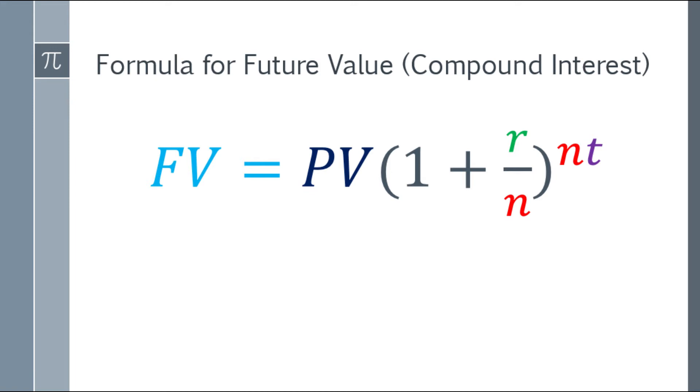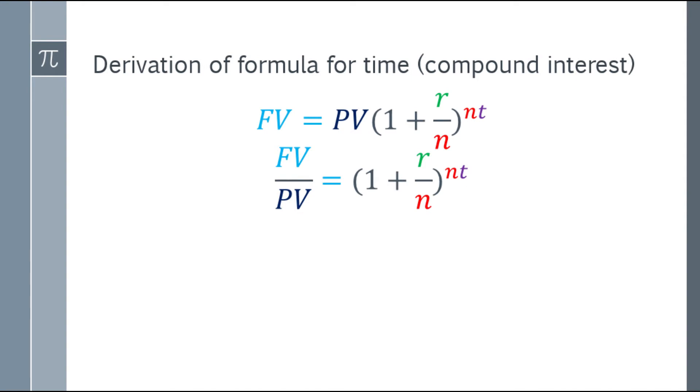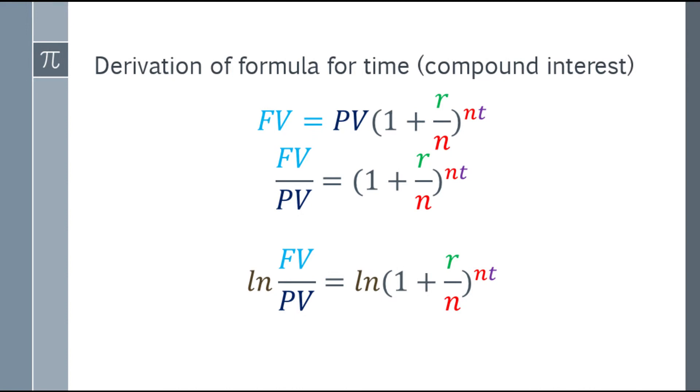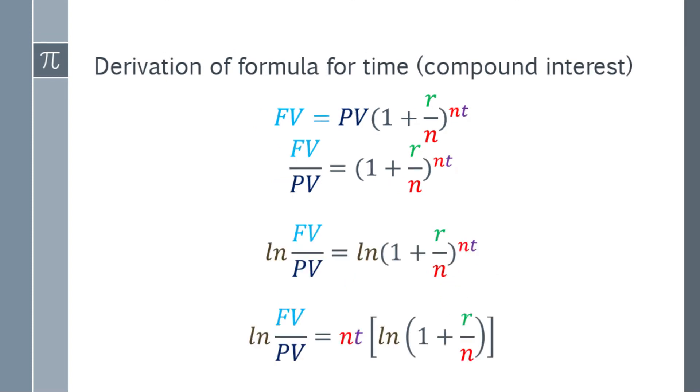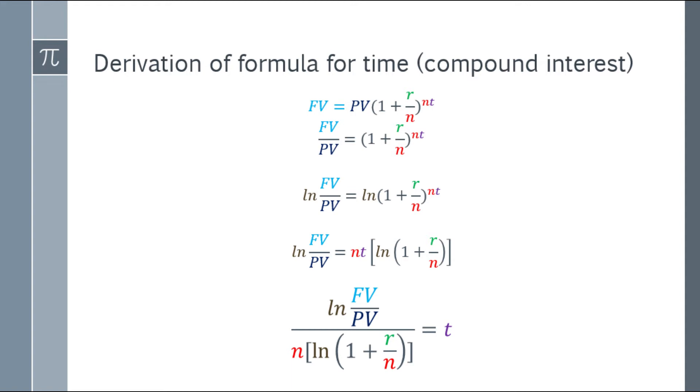Let's go back to the formula for future value. Future value equals the present value times the quantity 1 plus R over N, and the exponent is N times T. Now, divide both sides by PV, present value. This will be the answer: FV over PV equals the quantity 1 plus R over N, and the exponent is NT. Next, Ln comes in—natural logarithm. Take Ln of both sides. What you do on the left, you do the same on the right.